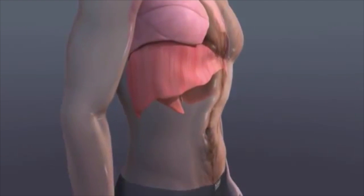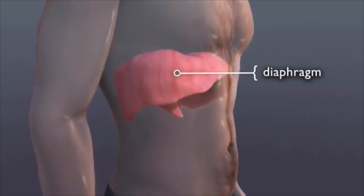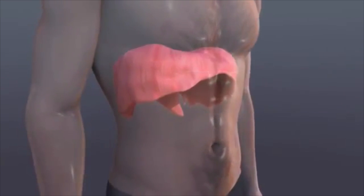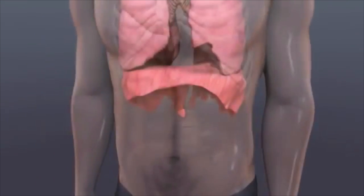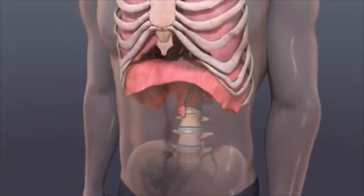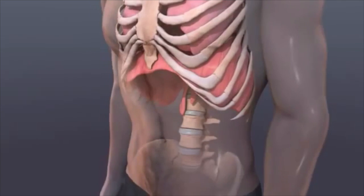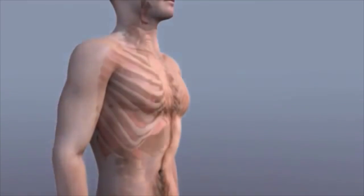Breathing involves movement of a thin muscle called the diaphragm, which separates the chest from the belly. The other way is by raising or lowering the ribs to increase or decrease the volume of the chest.